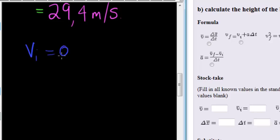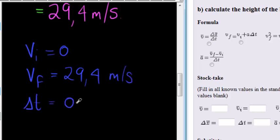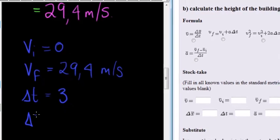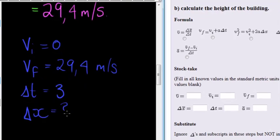So with everything that we do know: we know initial velocity is equal to zero, we know that final velocity is equal to 29.4 meters per second, change in time is equal to three seconds, and displacement is what we are trying to calculate, it's what we don't know.